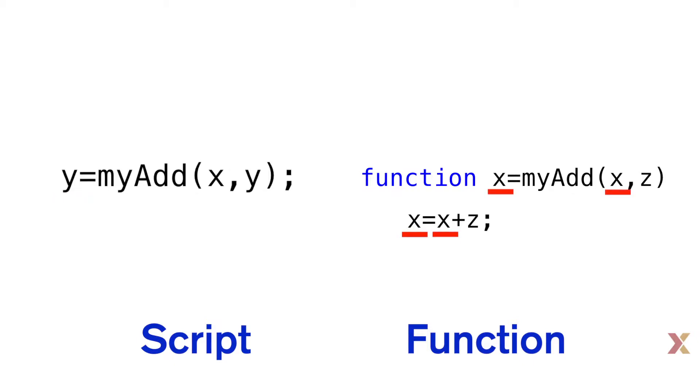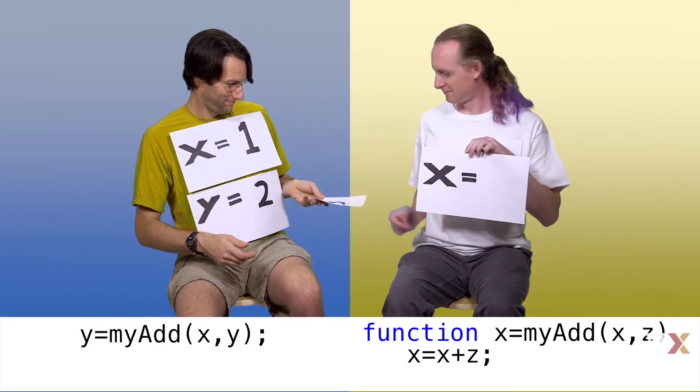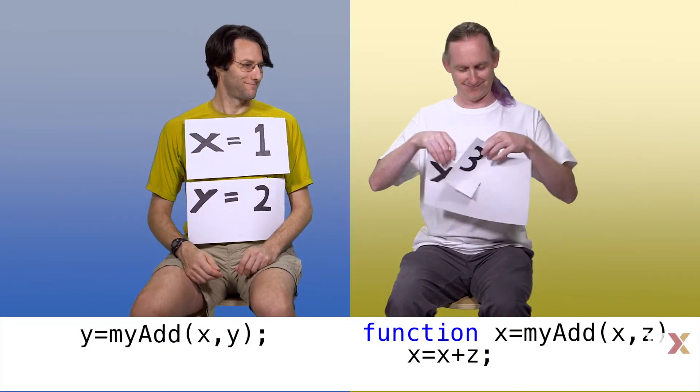Even though the function has a variable called x, it is not the same x as in the script. We say these two x's have different scopes. The function's x and the script's x can have different values. The script cannot change the value of x in the function. It can only pass a value to the function, and the function will decide what to do with it.